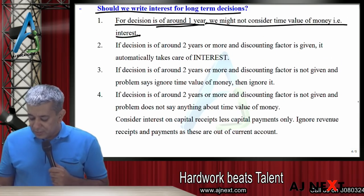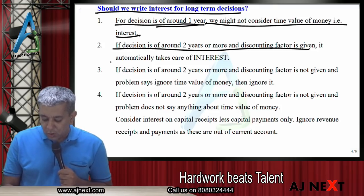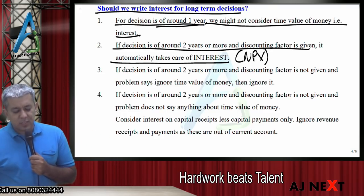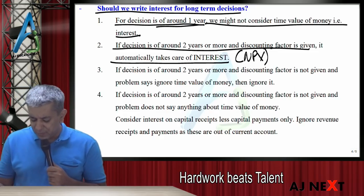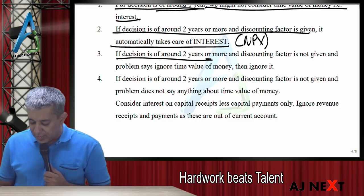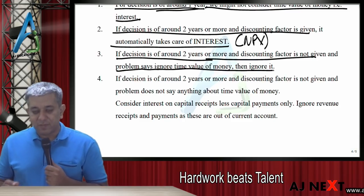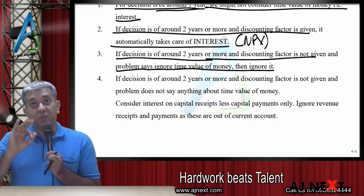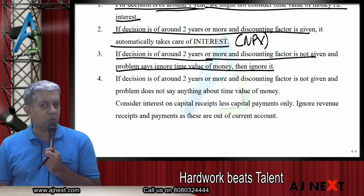Point 2: If the decision is of two or more years and discounting factor is given, it would automatically take care of interest, kyunki aap log NPV find out kar loge. Agar discounting factor diya hua hai, toh us ke andar automatically time value of money aa gaya. Point 3: If the decision is of two years or more, and discounting factor is not given, and problem says ignore time value of money, then ignore. Hum log ne aise ek do questions kiye the jahan pe offer was for three years lekin same ne bol diya tha ignore time value of money.